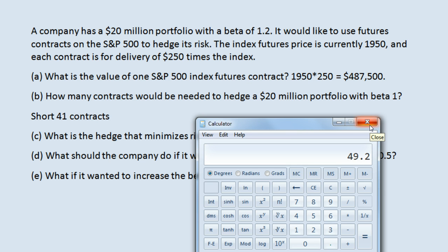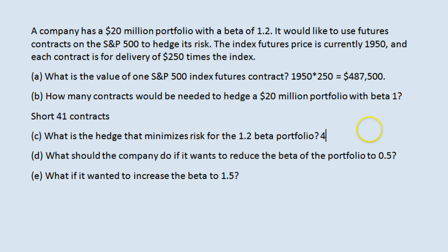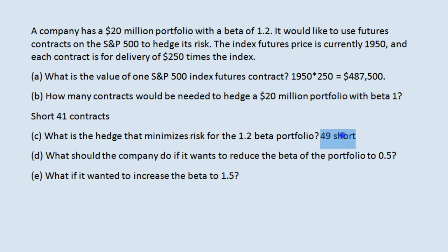Since we can't have partial contracts, we round — and again, these are short contracts. So the main takeaway: if the company has a $20 million portfolio with beta 1.2 and wants to completely hedge the risk, it will do so by going short 49 contracts.